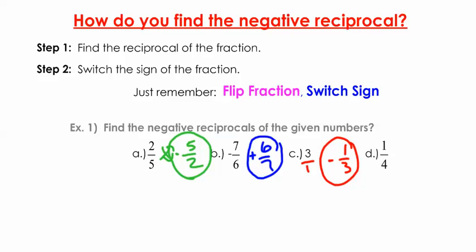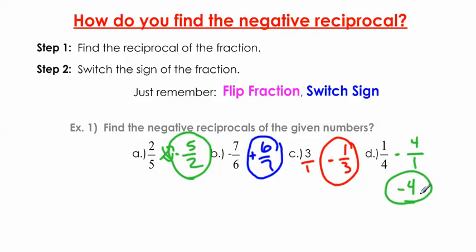If you're given a slope of 1 over 4, how do you find the negative reciprocal? Flip the fraction: put the 4 on top and 1 on the bottom. Then switch the sign from positive to negative. This gives negative 4 over 1, but you always want to simplify fractions — so negative 4 over 1 becomes just negative 4. The negative reciprocal of 1/4 is negative 4.